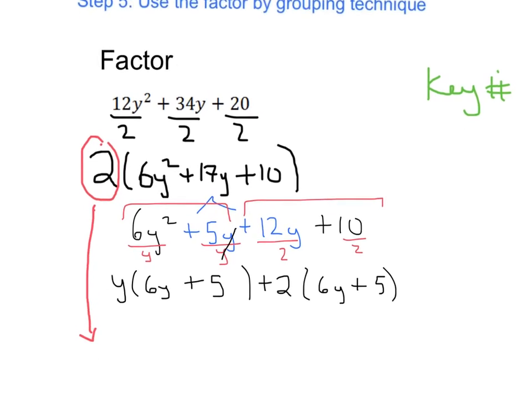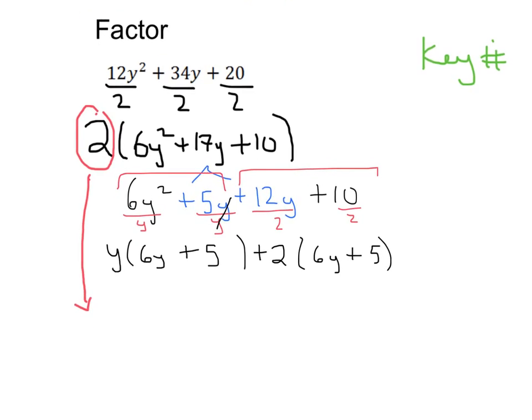Okay, now going to our last step here, we can see that what's inside our parentheses match up. So these each have a 6y plus 5, so we write the 6y plus 5 out front and what's left inside the parentheses.